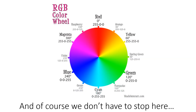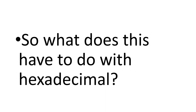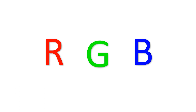And of course we don't have to stop here — using this system we could represent basically any color in the spectrum. So what does this have to do with hexadecimal? Well, as you know, you could represent each color with a number from 0 to 255, but you have to remember that computers don't really like the decimal number system.